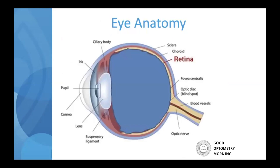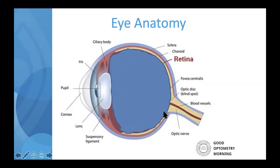Before we go any further, we're going to go back to grade nine anatomy class and talk a little bit about eye anatomy, just so we're all on the same page. You can think about your eyeball as a camera. A couple of main features: we've got the cornea, which is a clear tissue on the front; the iris, which is the colored part of the eye; and then the lens. The iris, lens, and cornea help focus the image on the back of the eye, where you have the retina — that's like the film of the camera.